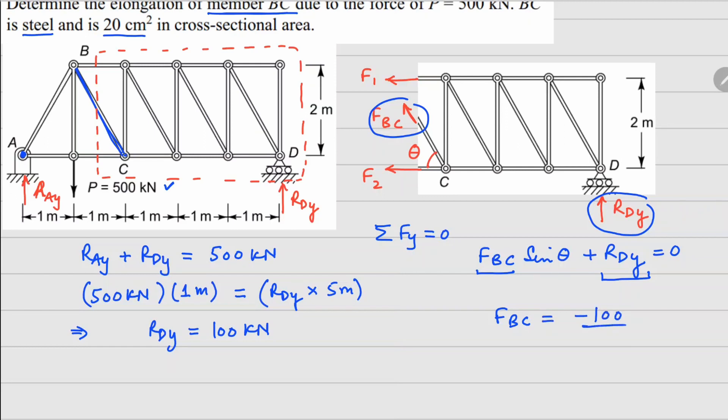Now how do you find this theta? If you look at this triangle, this is one meter, this one is two meters, so this becomes square root of five meters.